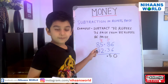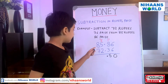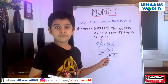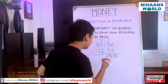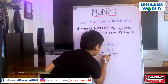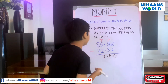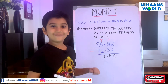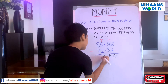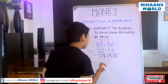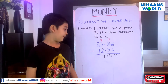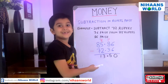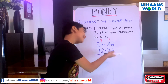And in the rupees place, 5 minus 2 is equal to 3, so we write 3 here. And 8 minus 7 is 1, so we write 1 here. So, we got the answer 13 rupees 50 paise.